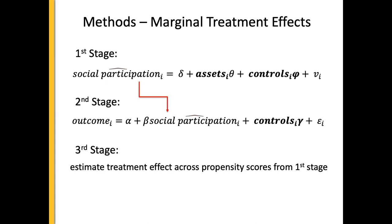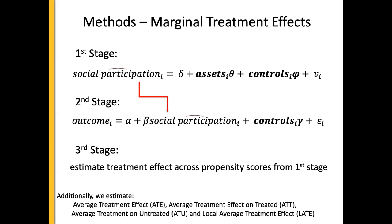This is slightly more complicated than a traditional instrumental variable model, but it allows us to see if there are heterogeneous effects across participation levels rather than just looking at the average person. We can additionally estimate the average treatment effects, the average treatment effects on the treated — those with high probability of participating — and the average treatment effects on the untreated, as well as the local average treatment effects, which is the compliers, corresponding to a traditional IV model.